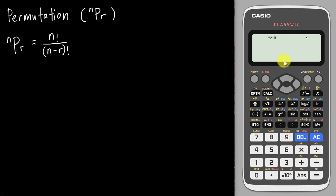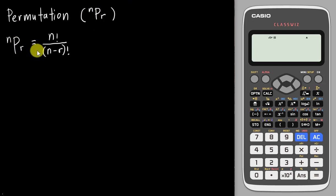First, you need to understand what permutation means. Permutation is basically a way of arranging different things. For permutation, we use NPR to represent it. NPR has its own formula: N factorial over N minus R factorial.